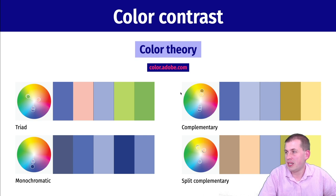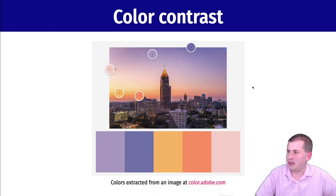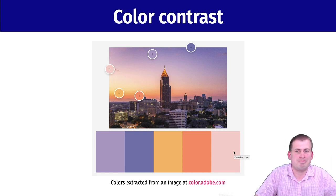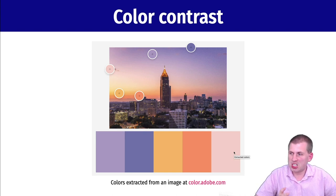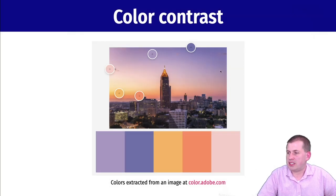Another cool thing on that same Adobe website is you can actually upload a picture. Here's a picture of Atlanta — it'll choose the most prominent contrasting colors from that picture and make a palette for you. This could be our 'Atlanta at sunset' palette that we could use for a report about urban issues in Atlanta, using those colors for graphs and font colors. They are good contrasting colors and not overly close together — that's another way of finding contrasting colors.